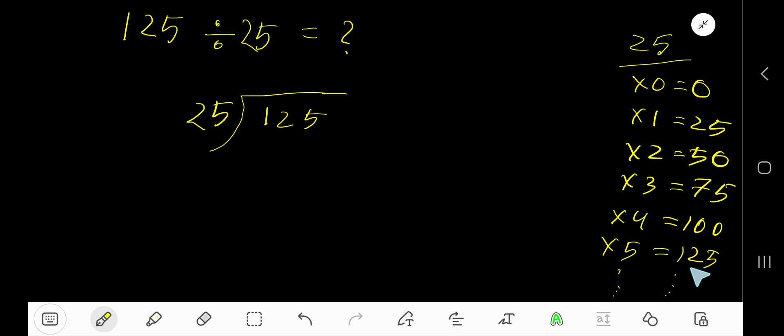100 plus 25 is 125. Look, 25 goes into 1 how many times? Zero times, as 1 is less than 25. So zero times 25 is zero, subtract, you get 1. Bring down this 2, now we have 12. 25 goes into 12 how many times? Zero times, as 12 is less than 25. Zero times 25 is zero, subtract, we get 12. Bring down this 5, now...